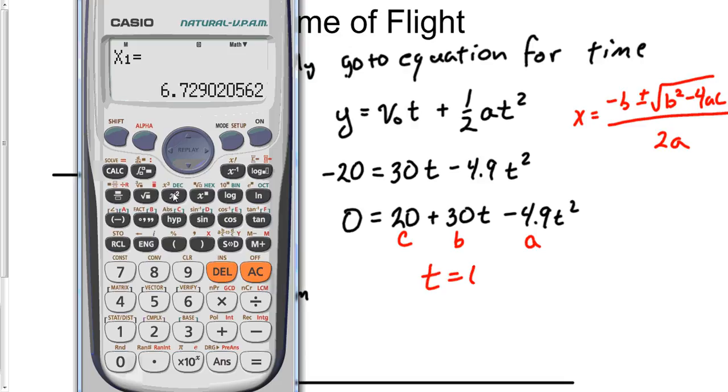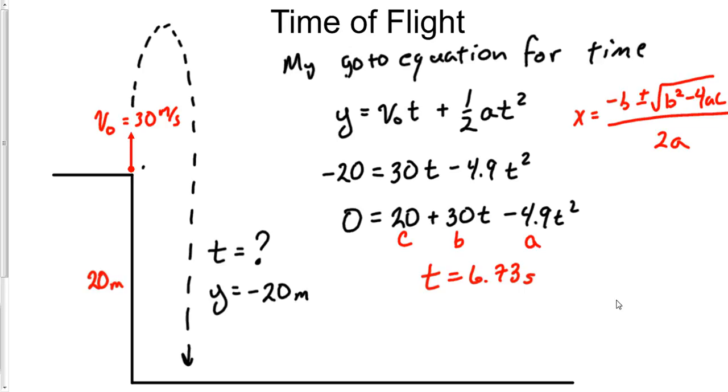So my quadratic is negative 4.9 equals, 30 equals, and 20 equals equals, and it tells me that time is 6.73 seconds. Now it will give me a second term too, negative 0.6, but remember there's no such thing as negative time, so all I'm looking at is this positive value that's in here.